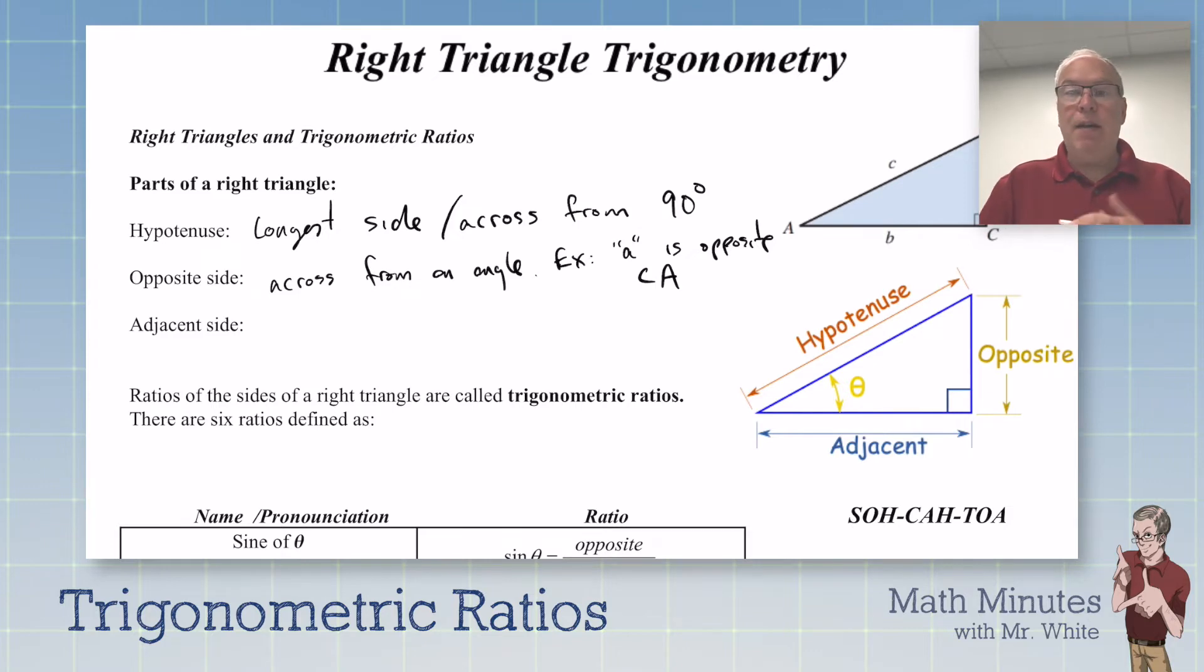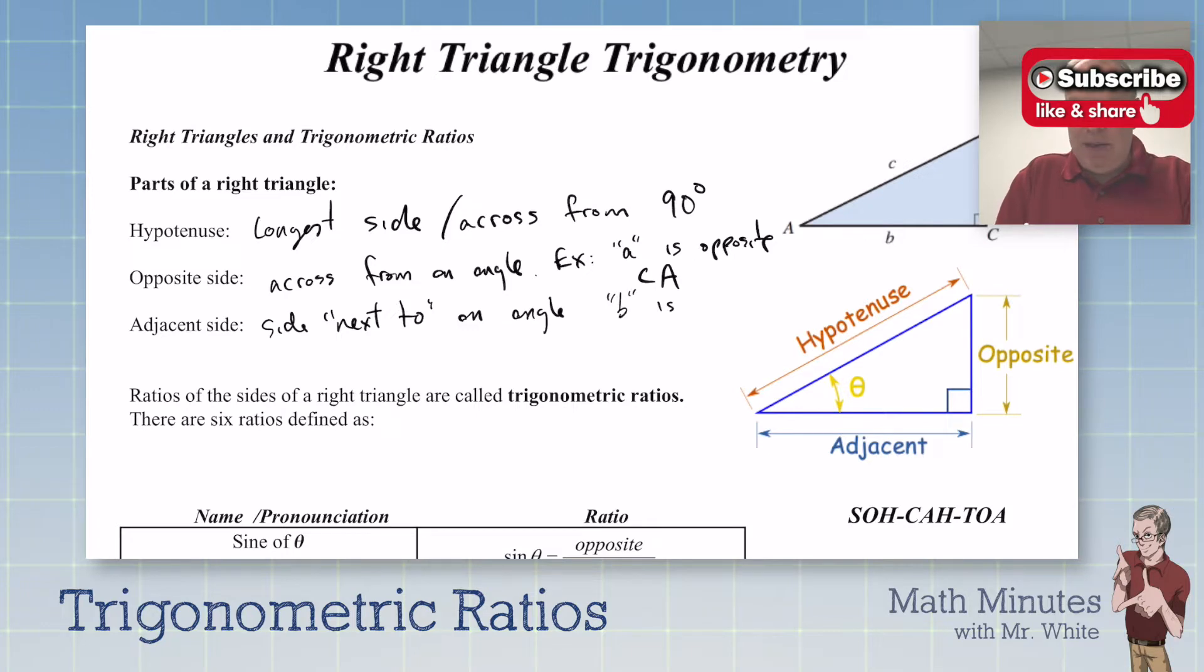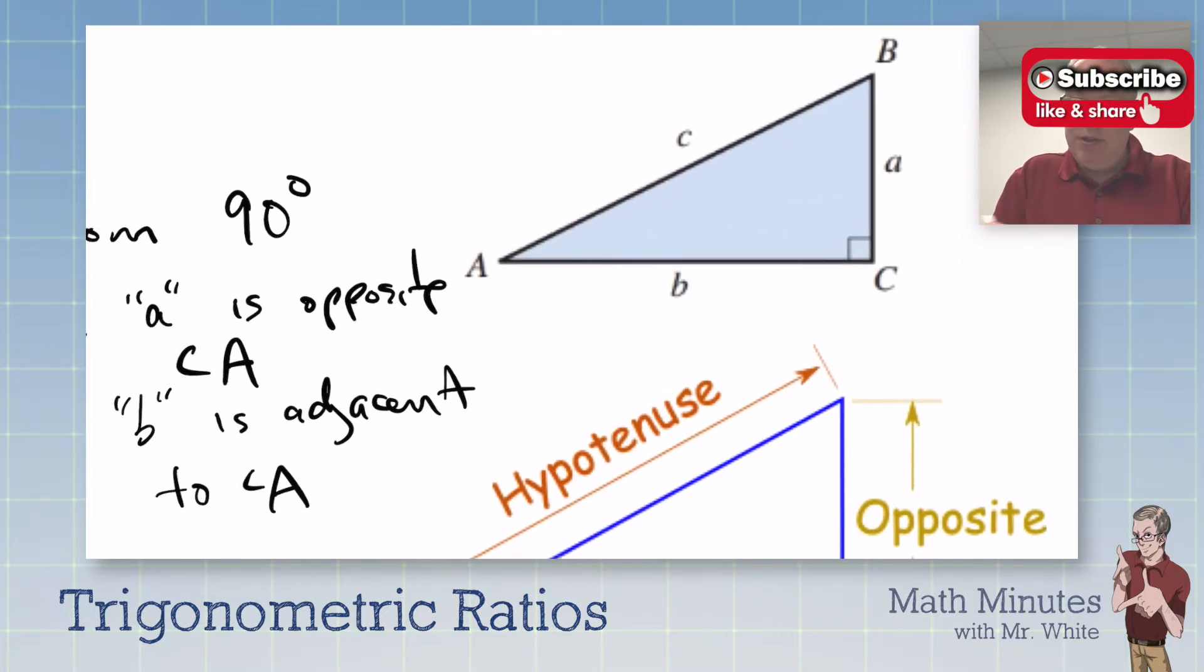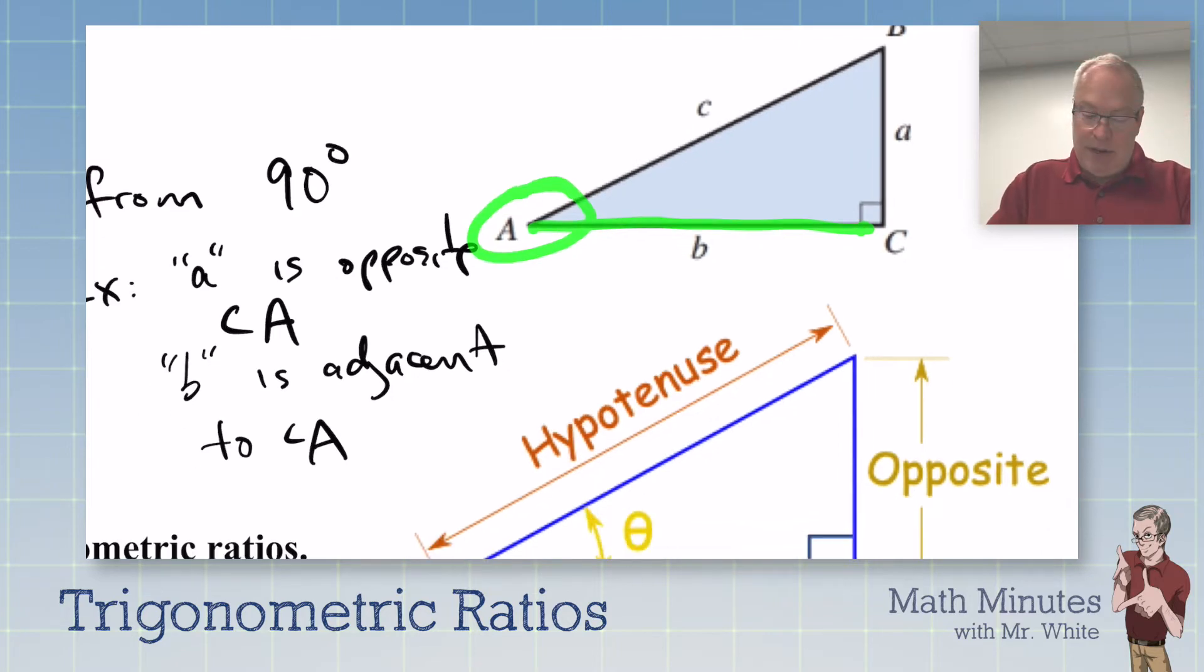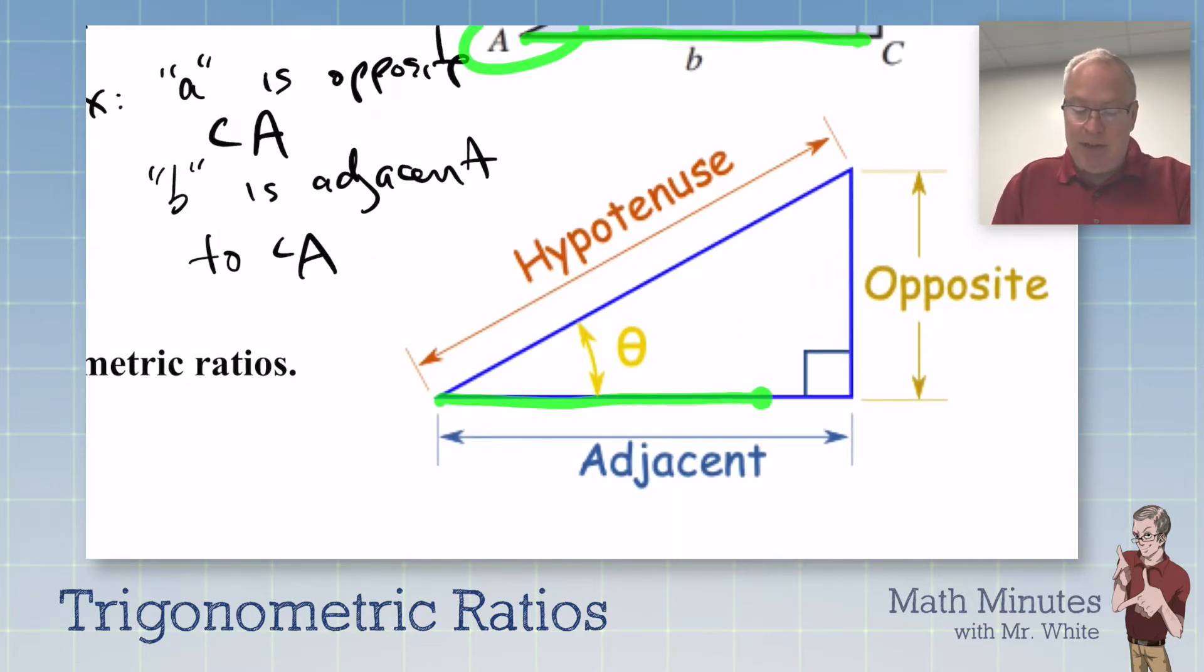Now adjacent - you might have someone sitting adjacent to you. What does that mean? Next to. So this would be a side next to an angle. We would say B is adjacent to angle A. You see how side B is next to angle A? That's adjacent. So down here we have the adjacent side to our theta angle, wherever that is.